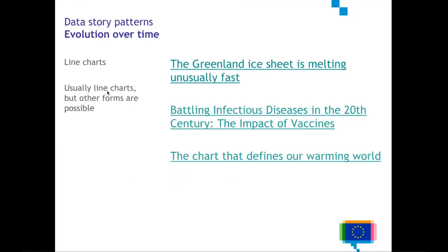The first story pattern is very straightforward — it's about evolution over time. If you have evolution over time, usually what you will use to visualize that information are line charts. Line charts can be very engaging. If you have a flat line that suddenly drops, people get curious. So if you have a break in your time series — something unusual going on — that is already worth visualizing to tell what has happened in the history of this chart.